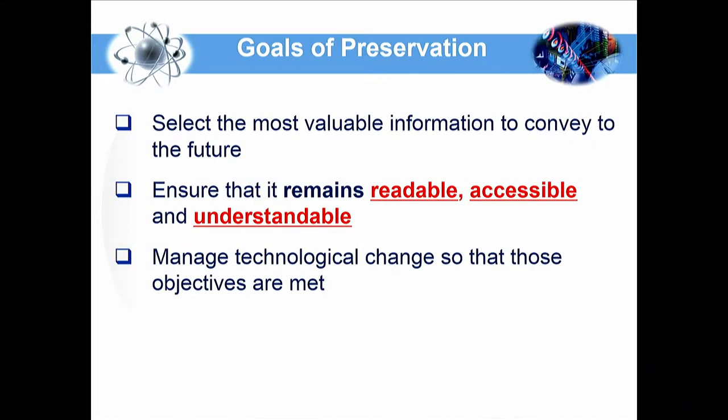What is the main goal of preservation? In 2002, I was at Cornell University and participated in a special project to clarify the procedure of digital preservation, including converting paper-based documents to digital form. We defined three main goals: first, to select the most valuable information — in knowledge terms, to select and capture critical tacit knowledge; second, to ensure that it remains readable, accessible, and understandable — meaning the media should be reliable and maintainable; and third, to manage technological change.